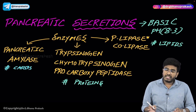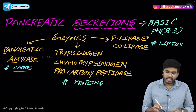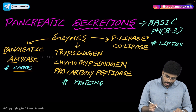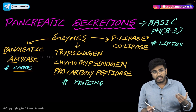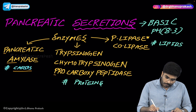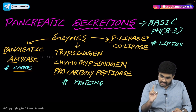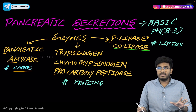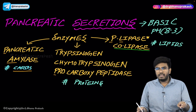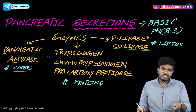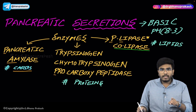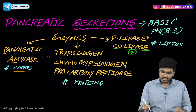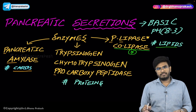Pancreatic amylase causes the digestion of carbohydrates. Trypsinogen, chymotrypsinogen, and procarboxypeptidase help in the digestion of proteins. Pancreatic lipase, as well as the important substance colipase, help in lipid digestion. This is an exam question — colipase is present in pancreatic secretions, not in saliva, bile, or gastric secretions.